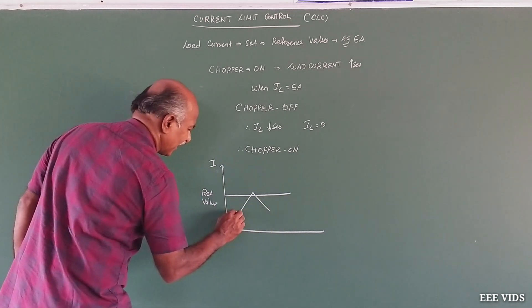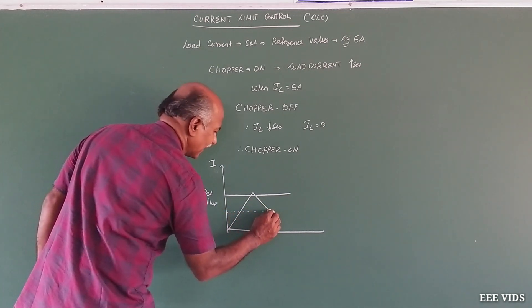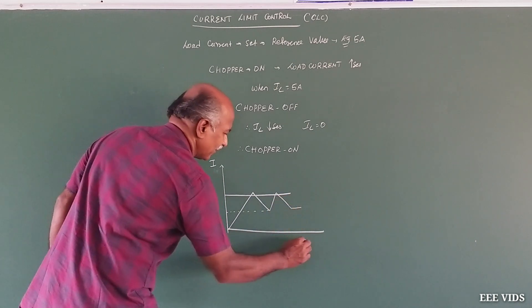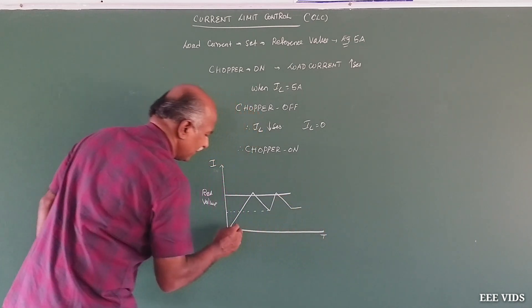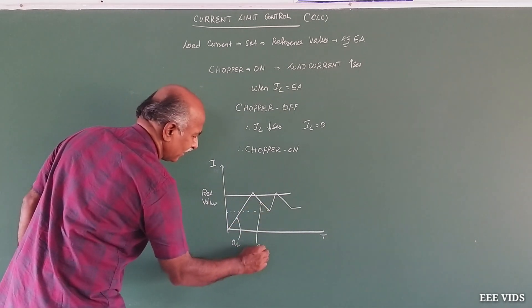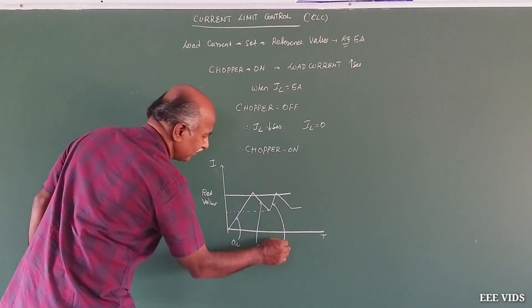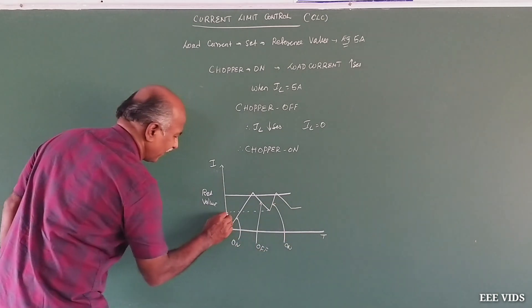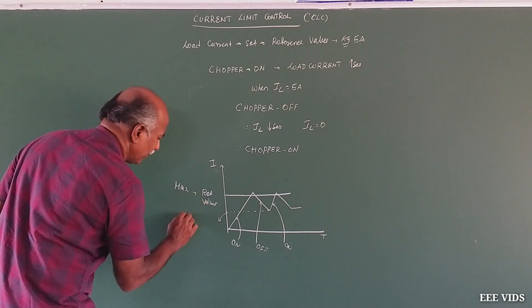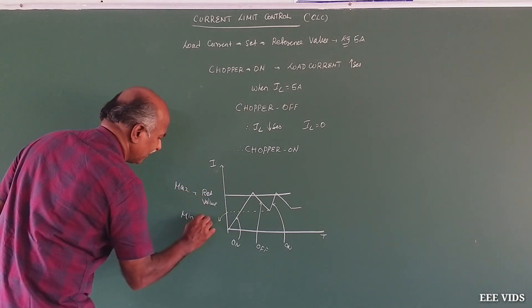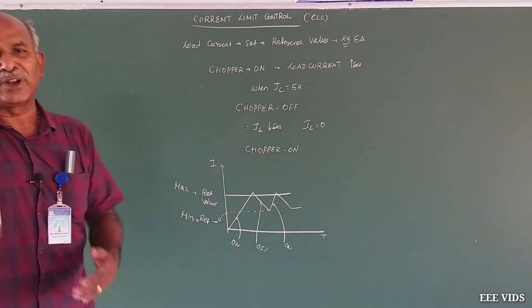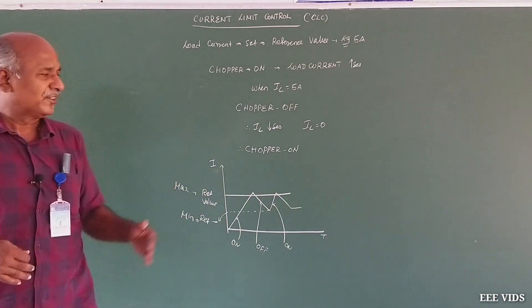So when the current decreases to the lower reference, the chopper turns on again. The current increases; when it hits the upper reference, it turns off again. This pattern repeats over time. We set a maximum reference and a minimum reference — a delimiter — and the chopper cycles on and off between them.